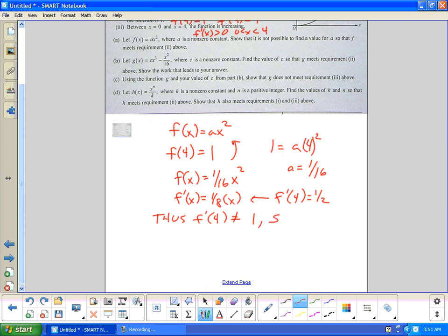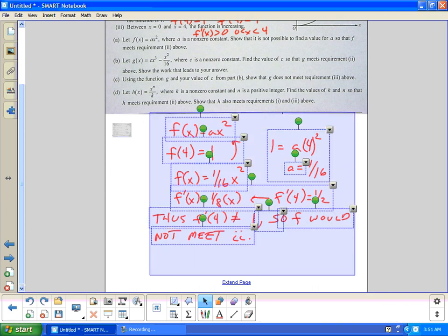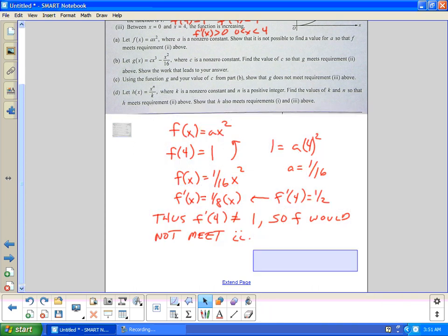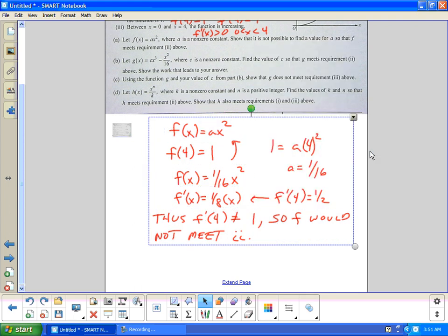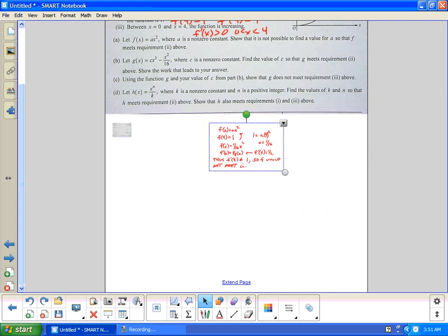So f would not satisfy two, would not meet requirement two. That's letter a in the red.